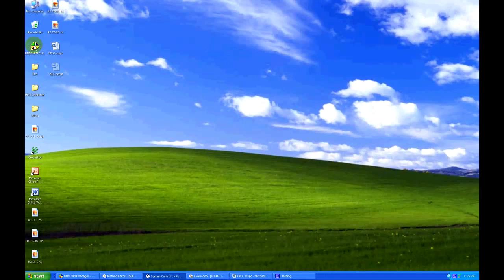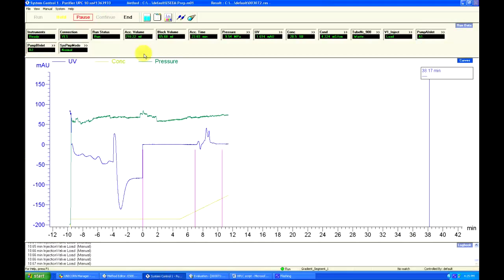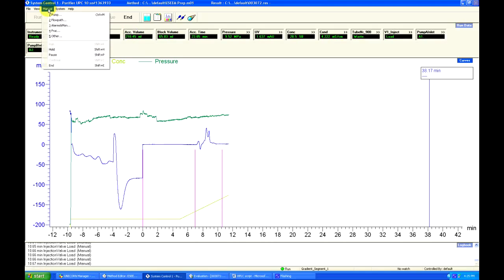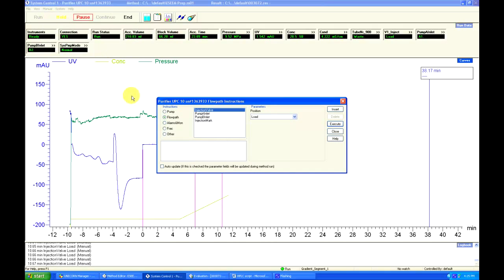With everything in order, we can now inject our sample. We must first open the Unicorn program and open up the system control window. There, go to the top and select Manual, then go down to Flow Path. By default, the parameter selected is Injection Valve. Modify the position parameter from Load to Inject, then hit Execute.